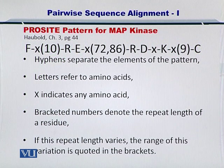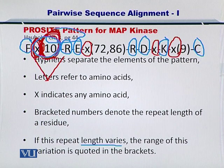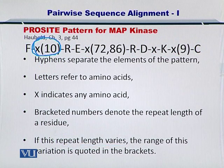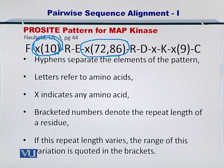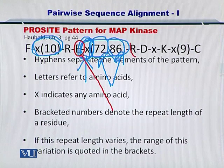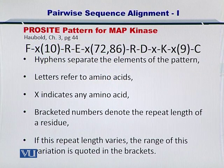There can be a case where this repeat length varies. As we just saw, in this case the repeat length was just 10, so you could have 10 amino acids repeated. Here, a little further down in the sequence, you can see 72, 86 — it essentially means any amino acid, because there is an X, can occur between 72 to 86 times between E and R. This is how ProSite patterns are built, and they are very useful in generalizing the patterns within sequences.